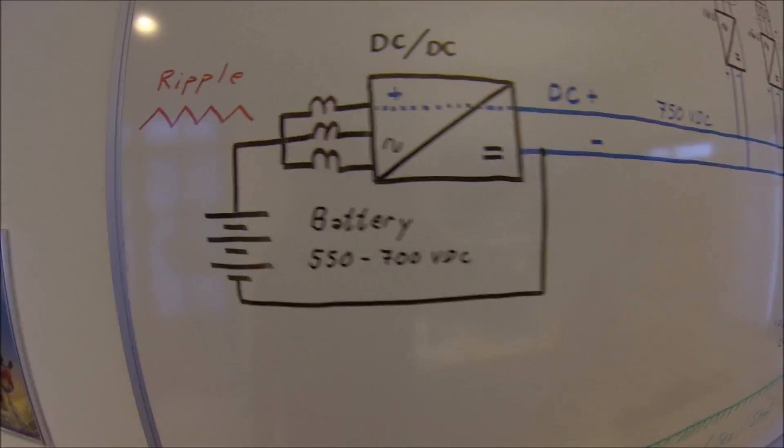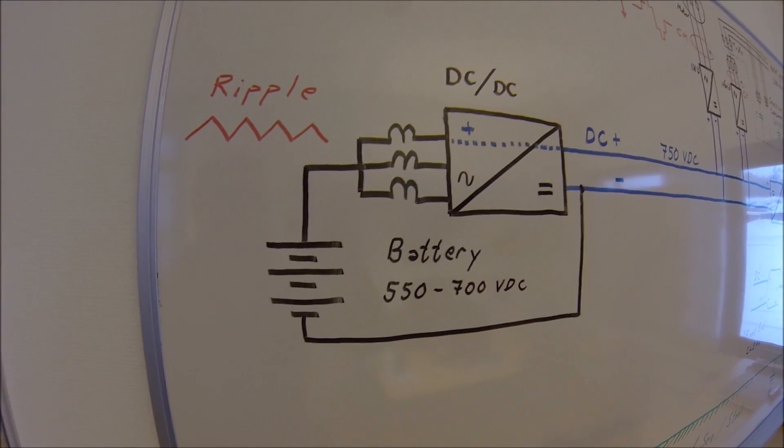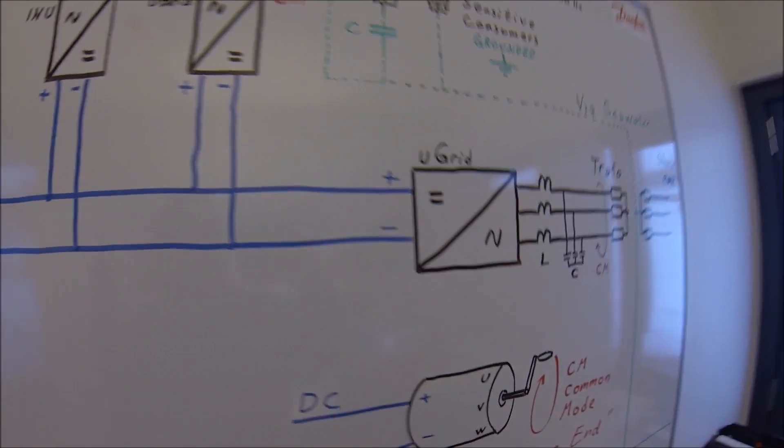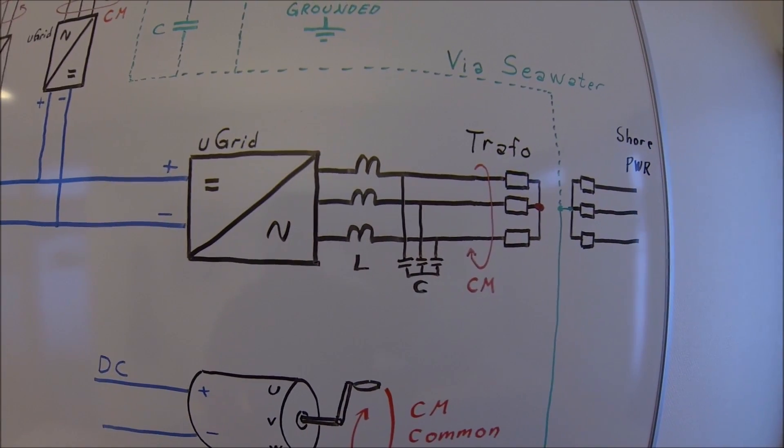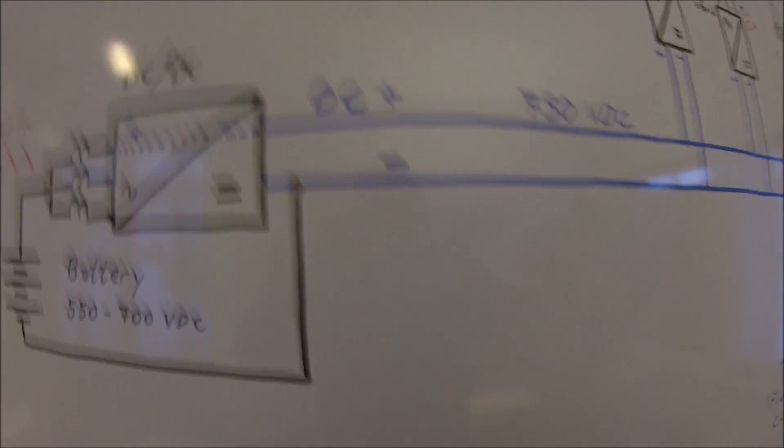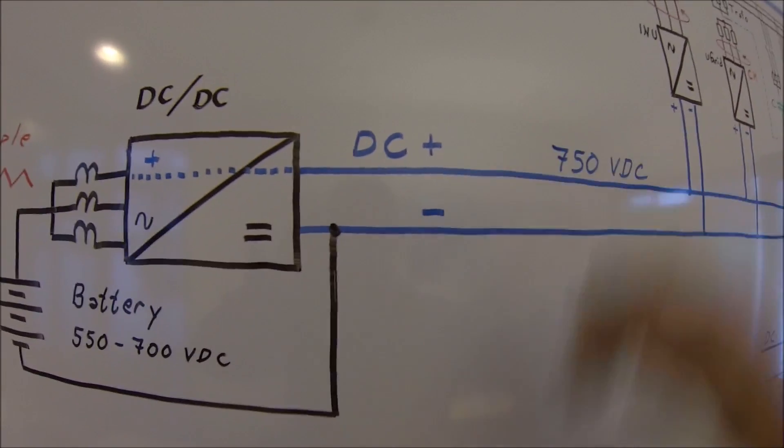What about our battery? Our battery needs to float freely on its DC bus system. And here we have a challenge because if we put any common mode on the DC voltage, the whole battery will start going up and down.